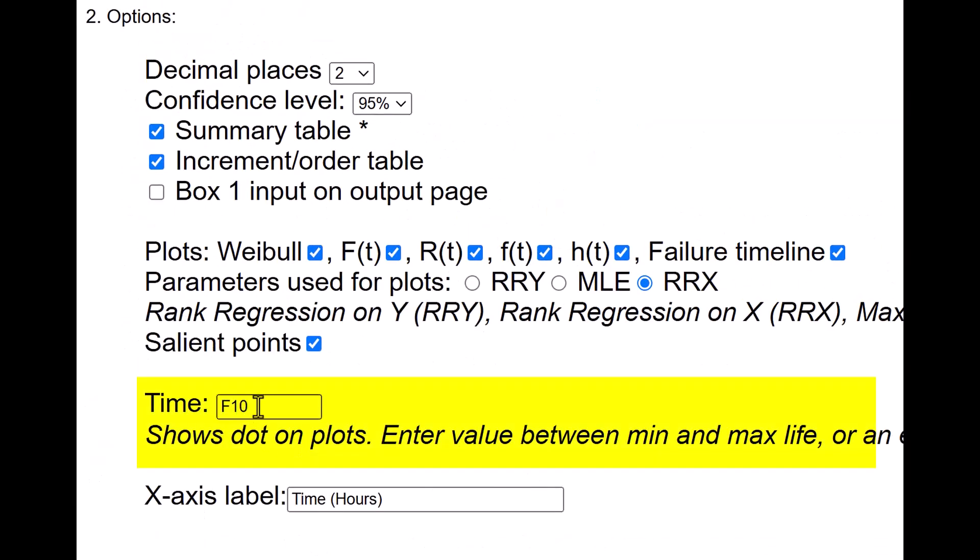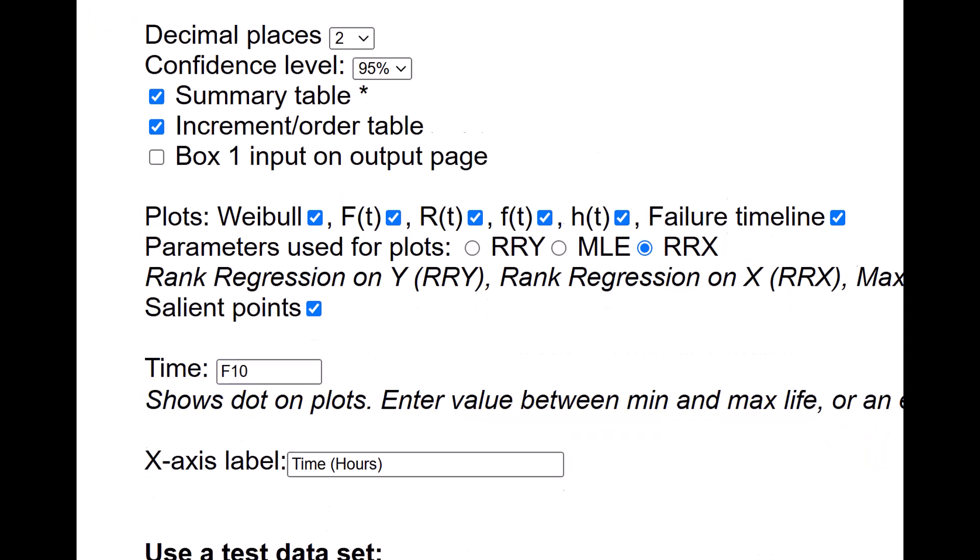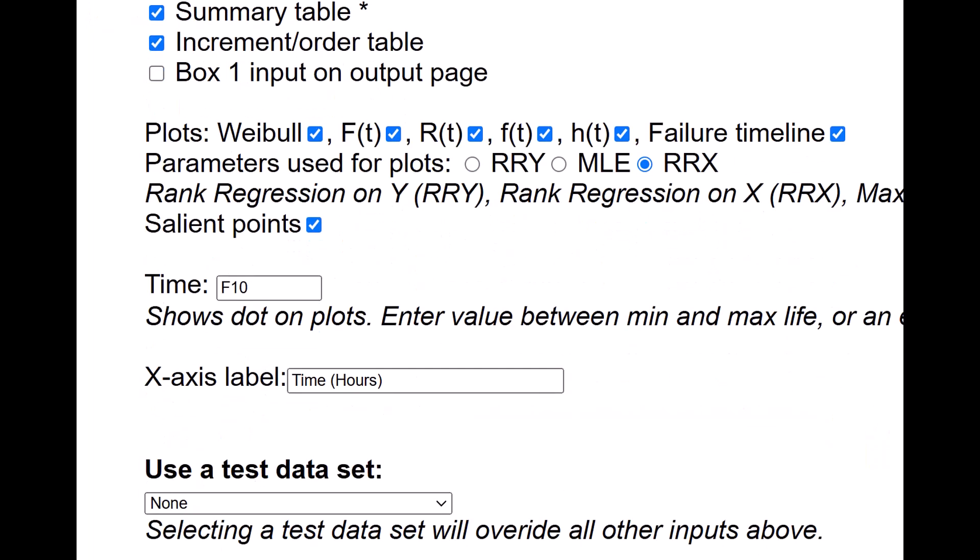And then time is F10. That means it will show you the 10% B10 life or F10 life, which means 90% reliability point. And that's it. Click on calculate.